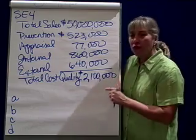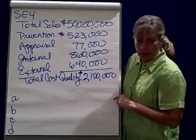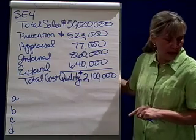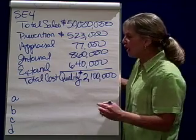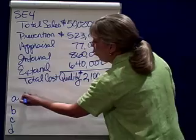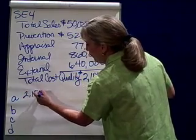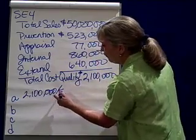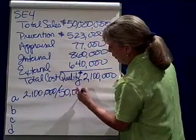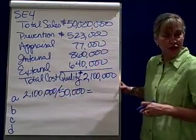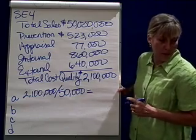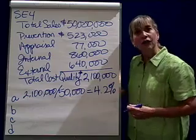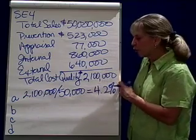Part A asks us to figure out the total cost of quality as a percentage of sales. The total cost of quality is $2.1 million divided by total sales of $50 million. As a percentage of sales, this company is spending about 4.2% on quality.